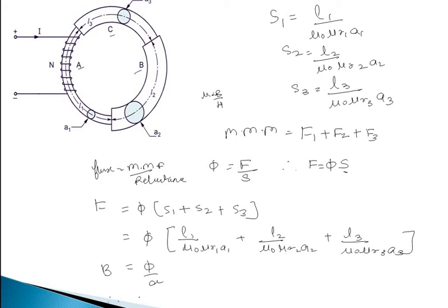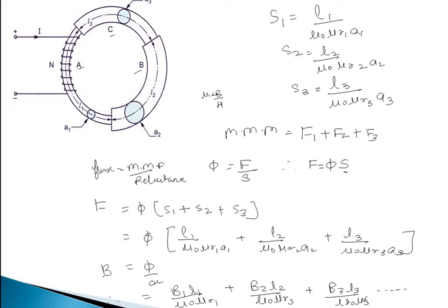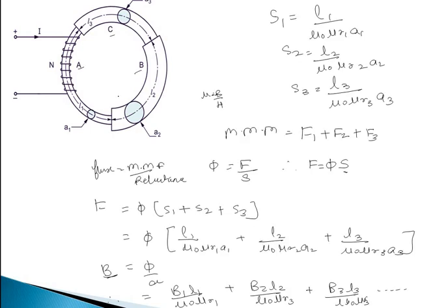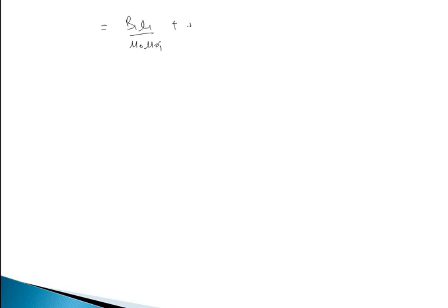Therefore the relation becomes: F = B1·L1/(μ₀μr1) + B2·L2/(μ₀μr2) + B3·L3/(μ₀μr3). We have substituted the flux density into the equation, so the final equation is: F = B1L1/(μ₀μr1) + B2L2/(μ₀μr2) + B3L3/(μ₀μr3).